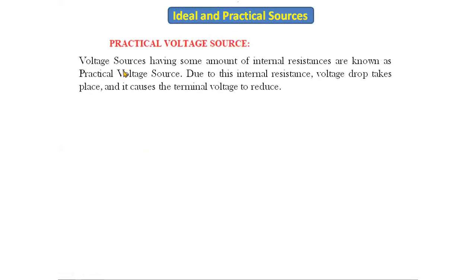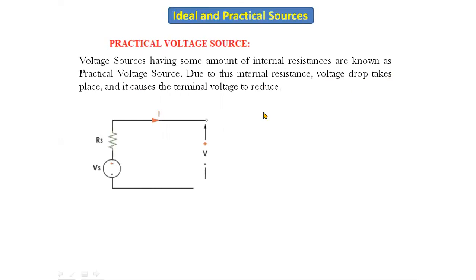Now let's look at the practical voltage source. Voltage sources having some amount of internal resistance are known as practical voltage sources. Due to this internal resistance, a voltage drop takes place and it causes the terminal voltage to reduce. The practical voltage source symbol shows one voltage source connected in series with a resistance. In the ideal voltage source this internal resistance was not there; in the practical voltage source there is an internal resistance.